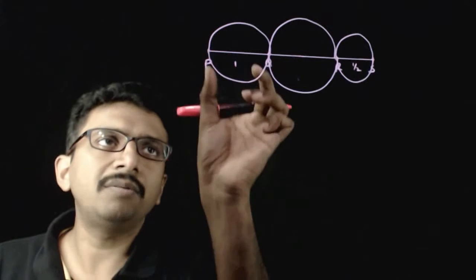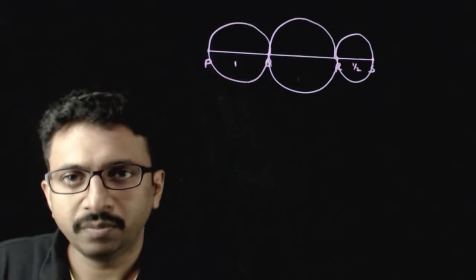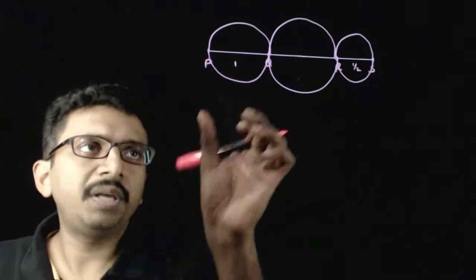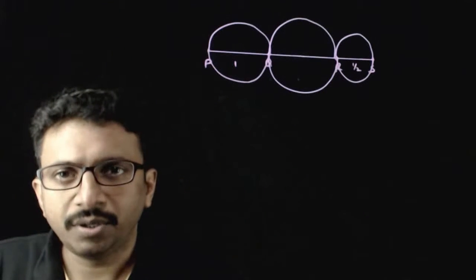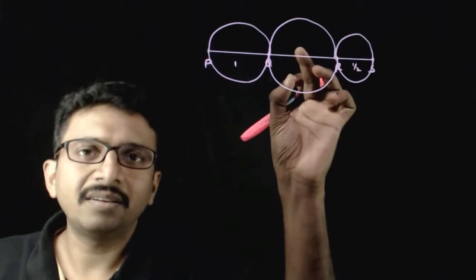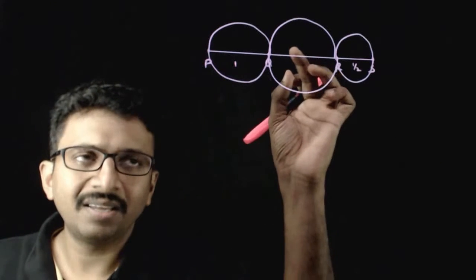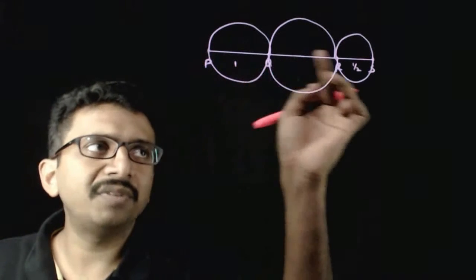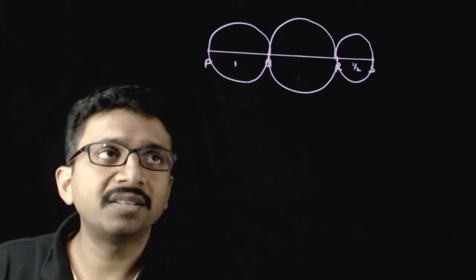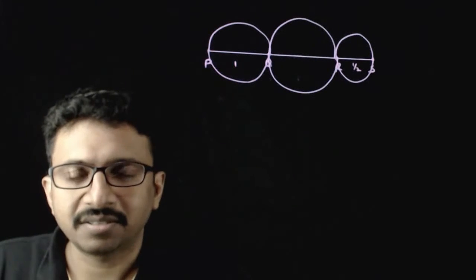It is also given that PQ is equal to 1 and RS is equal to 2, and the area of the middle circle is the average of the areas of the other two circles. What is the value of QR that is being asked?